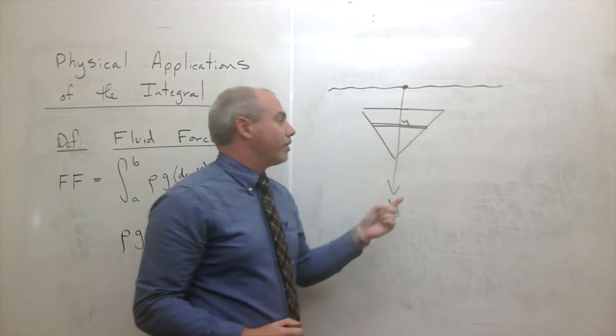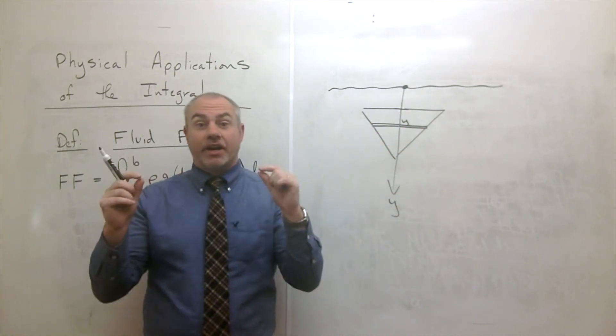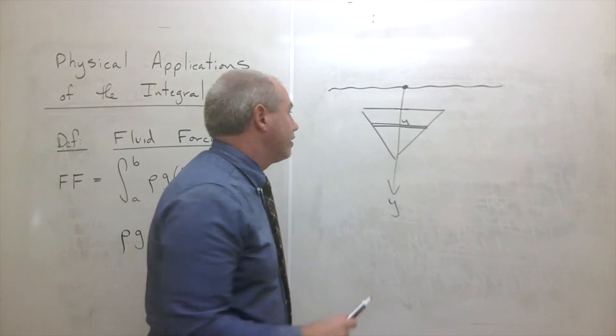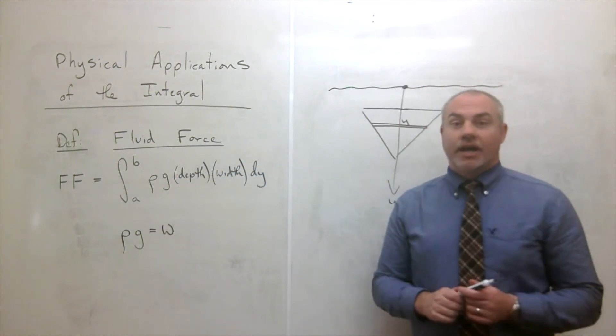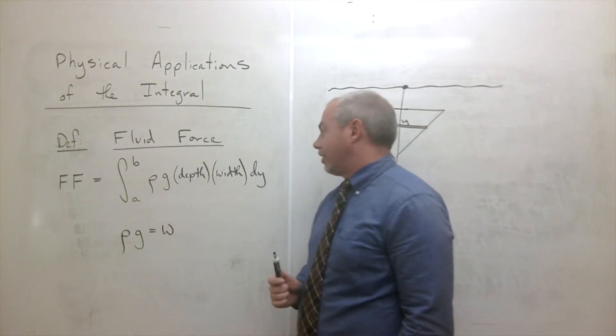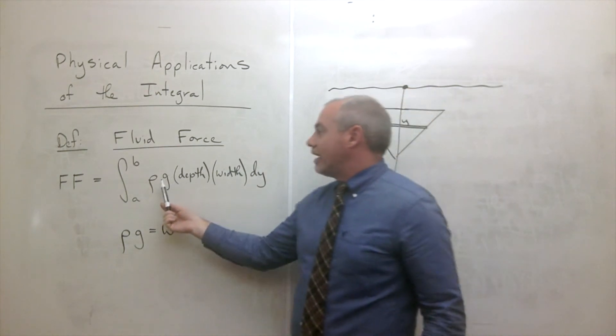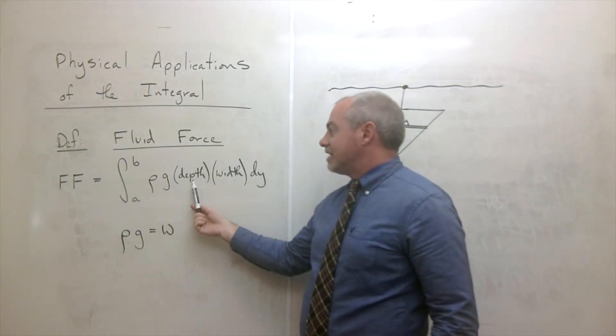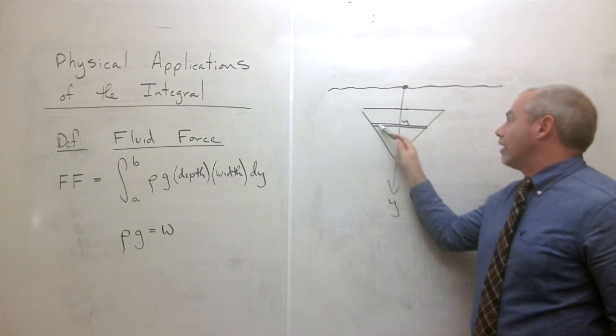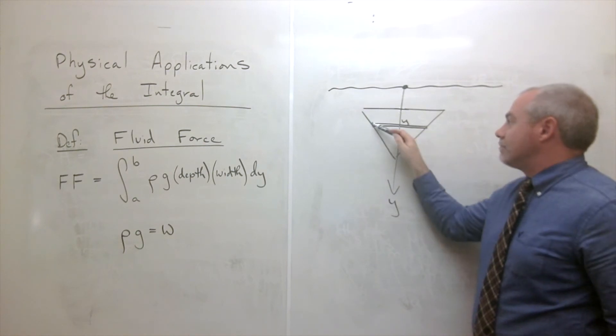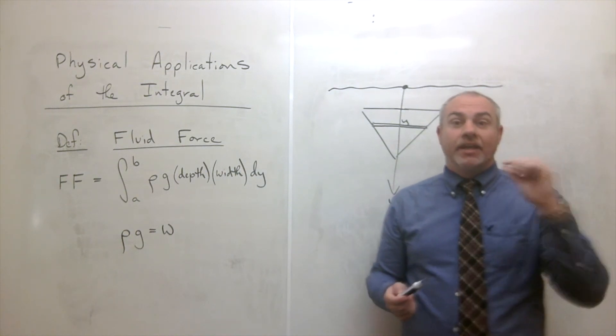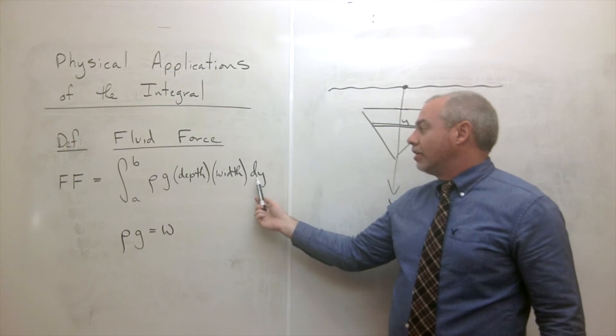Well, it's the surface area of that strip times the pressure at that point. The pressure has to do with the depth times the weight density of the water. So what I do is I'm going to multiply the weight density of the water times the depth of that little strip times the area of that little strip. And what is the area? Well, it's the width of the strip times the length of the strip, but the length of the strip is just a little tiny change in y, and a little tiny change in y we call dy.